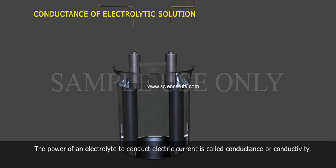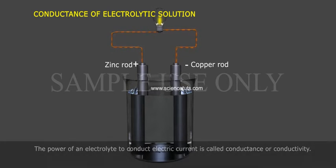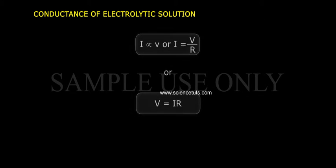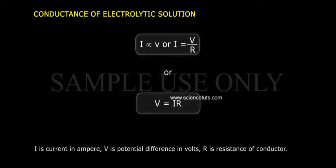Conductance of electrolytic solutions: the power of an electrolyte to conduct electric current is called conductance or conductivity. Just like metallic conductors, electrolytic solutions also obey Ohm's Law. The current flowing through a conductor is directly proportional to the potential difference across it: I is proportional to V, or I = V/R, or V = IR, where I is current in amperes, V is potential difference in volts, and R is resistance of the conductor.